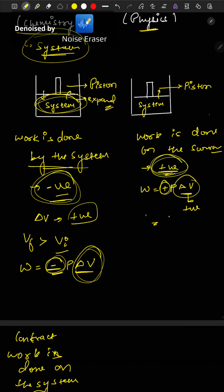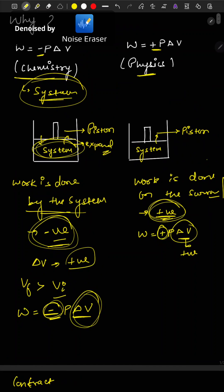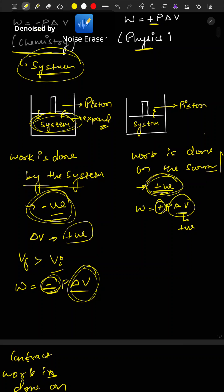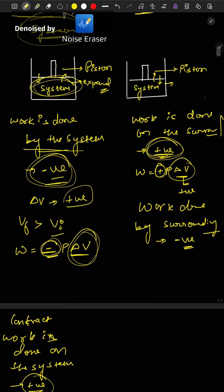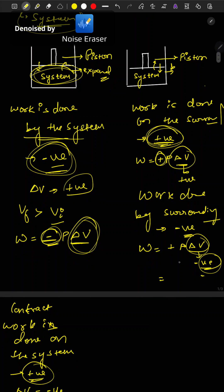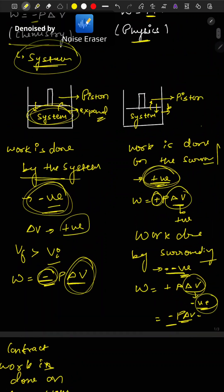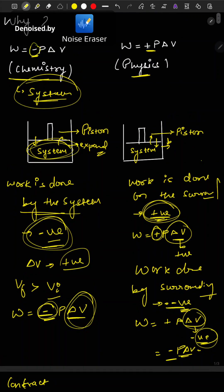Vice versa in physics: when work is done by the surrounding on the system, it will contract, so work done by the surrounding is negative. Here W = +P·delta V, but delta V is negative as the system contracts, giving W = -P·delta V. This is why the sign convention differs between chemistry and physics.